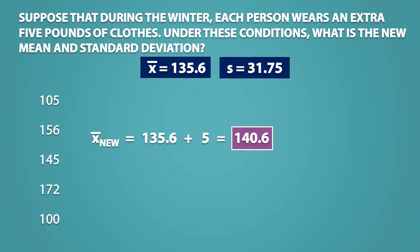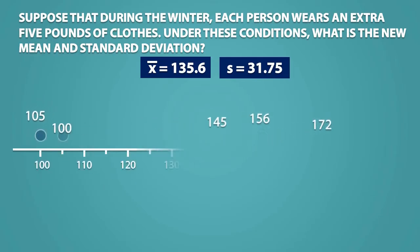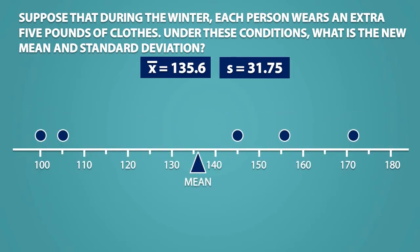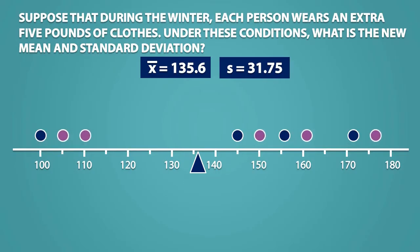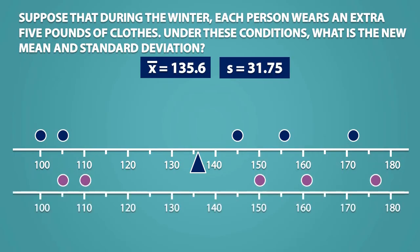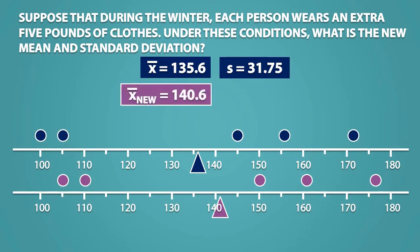Conceptually, let me show you why we could do this. Here I have plotted the data on a number line, and here is the original mean. By adding 5 to each data point, we shift the entire distribution towards the right. The new distribution looks like the old distribution except it is shifted to the right by 5. Remember that the mean is the balance point of a dataset, so because the new distribution looks like the old one, the new mean must be in the same kind of position. So adding 5 pounds to each data point actually adds 5 pounds to the mean as well, giving us a new x-bar of 140.6.